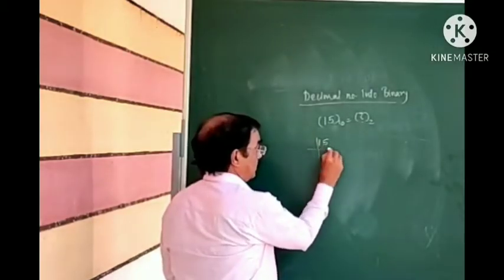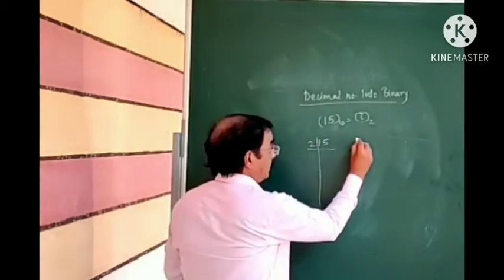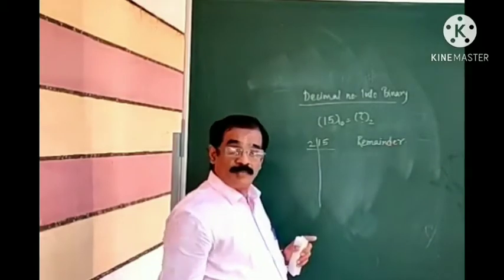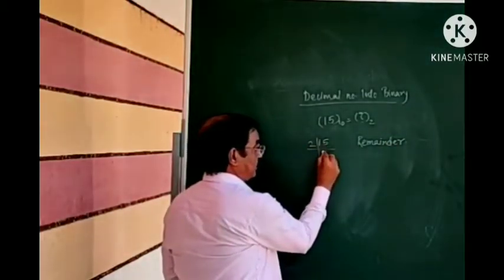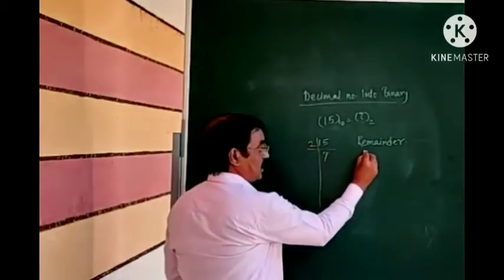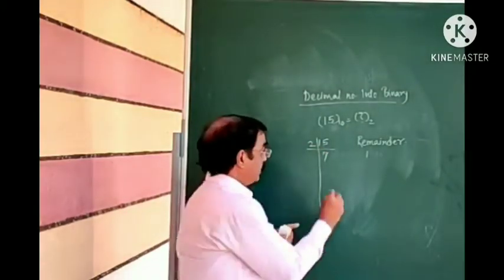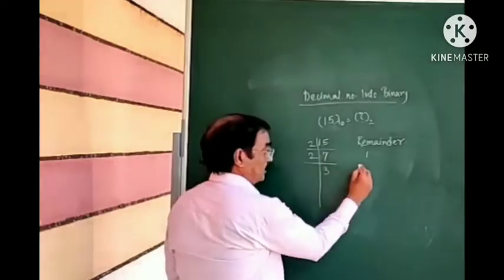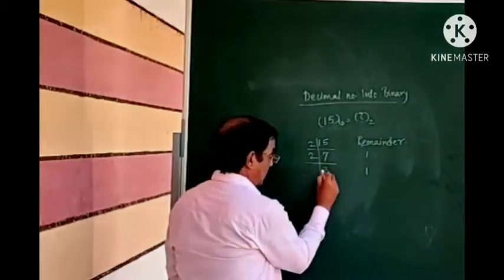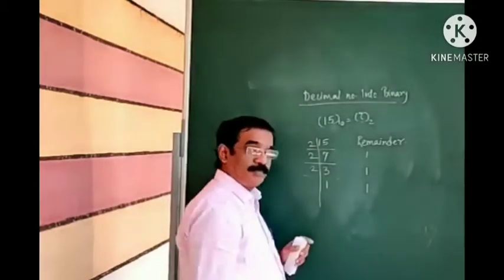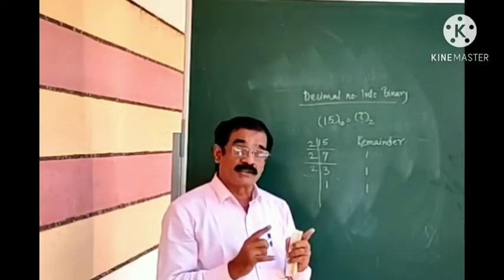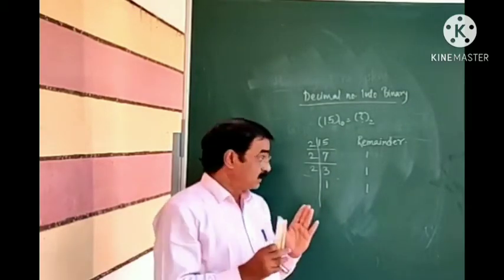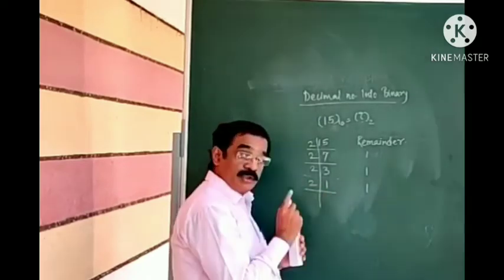15 divided by 2 gives 7 remainder 1. 7 again divided by 2 gives 3 remainder 1. 3 again divided by 2 gives 1 remainder 1. 1 divided by 2 gives 0 remainder 1.